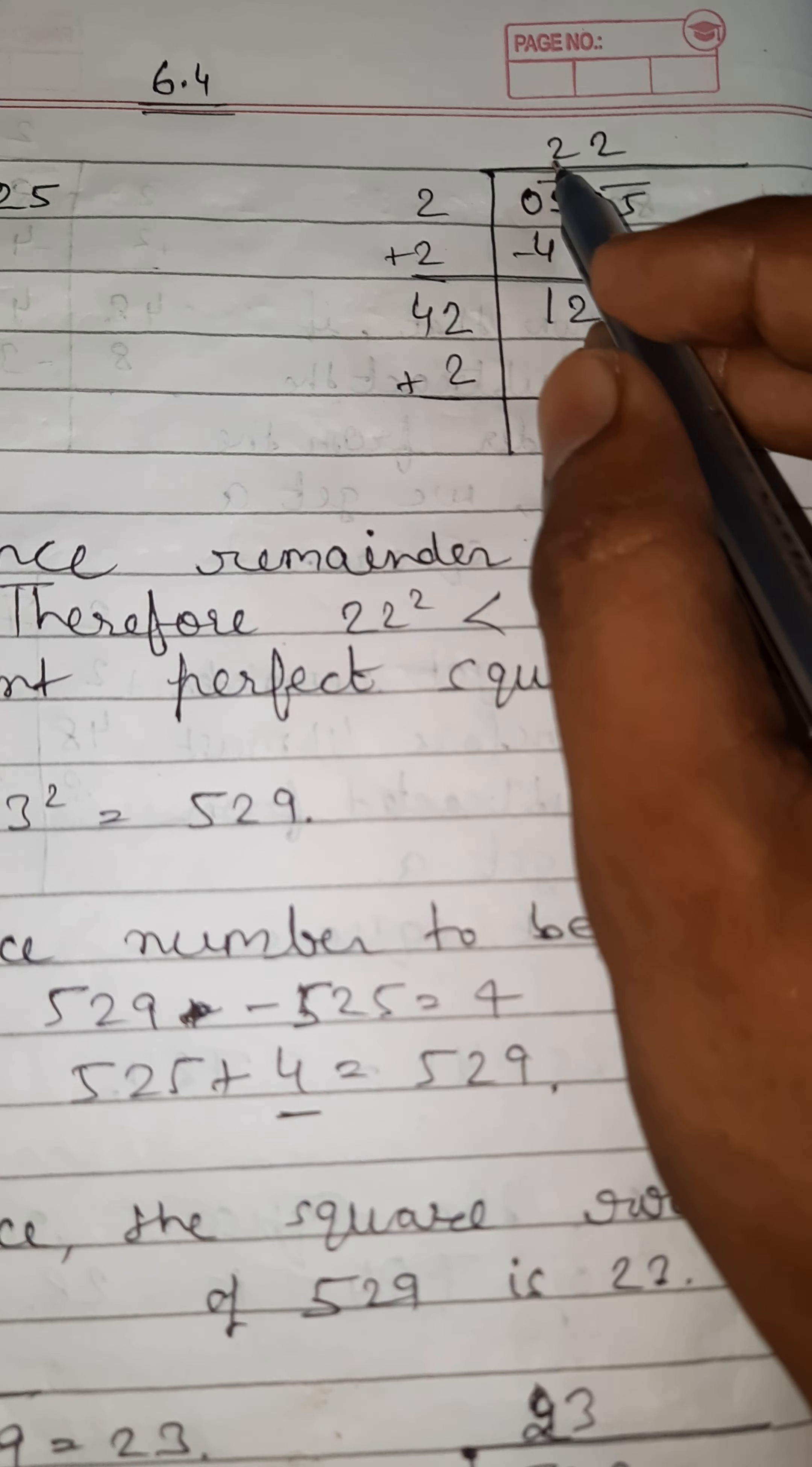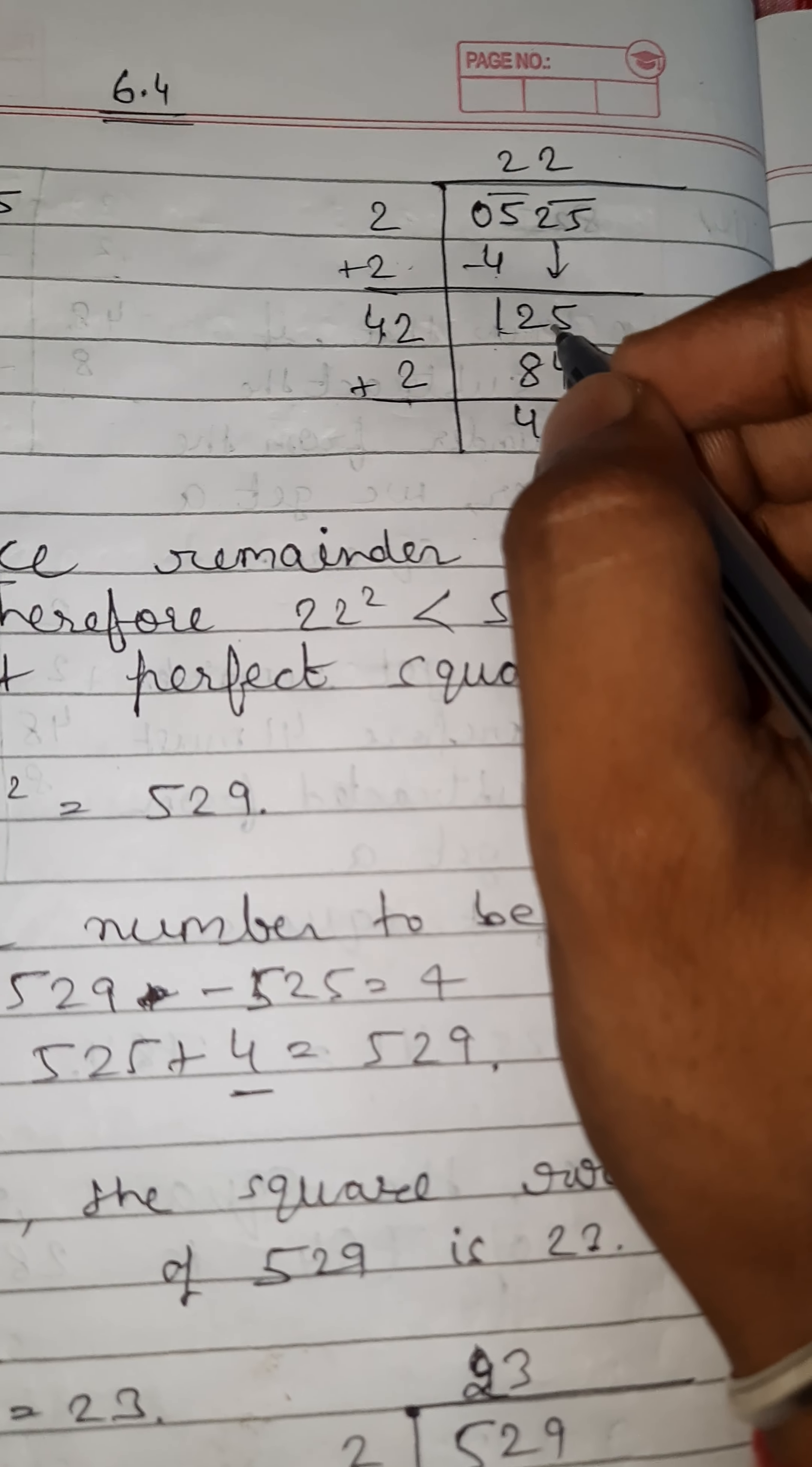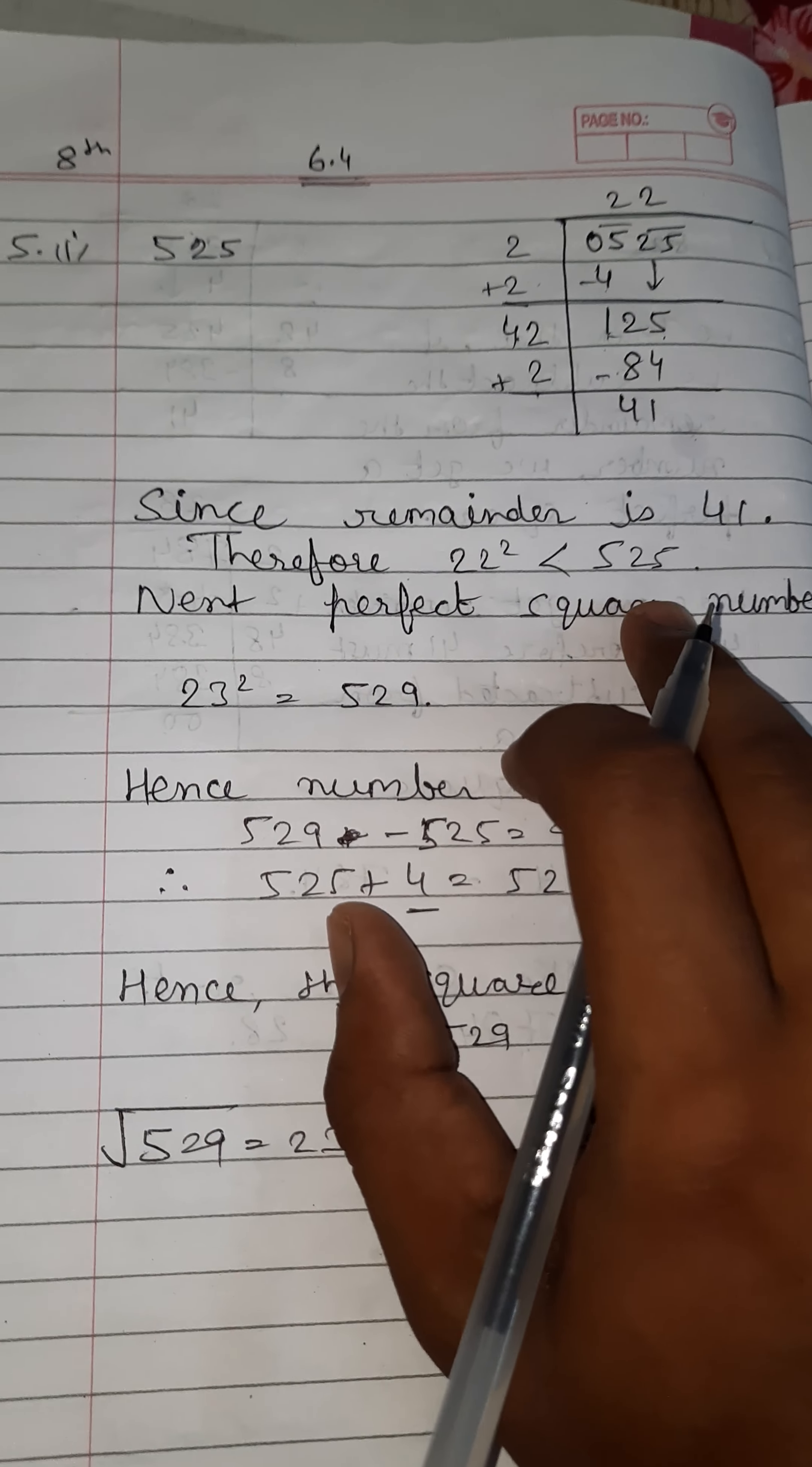Now 2 plus 2 is 4. Now 5 minus 4 is 1, and 25 brought down becomes 125. If you put 3 here, then 43 times 3 is 129, which is more than 125. Then we put 2 here and here. 42 times 2 is 84. Now after subtraction, we get 41 as remainder.